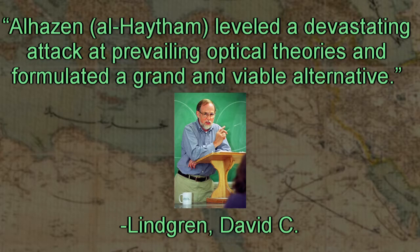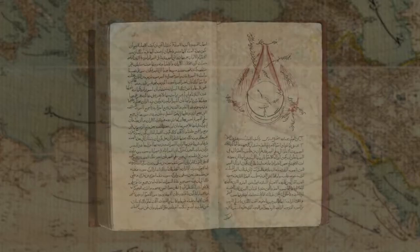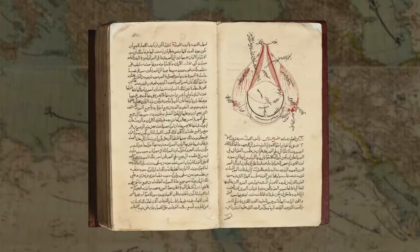According to Lindgren, al-Haytham leveled a devastating attack at prevailing optical theories and formulated a grand and viable alternative. Ibn al-Haytham wrote on subjects such as visibility, the perception of color, the effect of bright lights on the eye, how light enters the eye, and more.